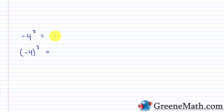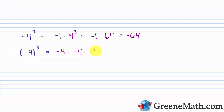Without parentheses, this is negative 1 times 4 cubed: 4 cubed is 4 times 4 which is 16 times 4 which is 64, so negative 1 times 64 is negative 64. With parentheses, this is negative 4 times negative 4 times negative 4: negative 4 times negative 4 is positive 16, and positive 16 times negative 4 is negative 64. We get the same result because we have an odd exponent. An odd number of negative factors will always give you a negative result. With an even exponent, an even number of negative factors gives a positive result — so whether you have parentheses around the base definitely changes the answer when you have an even exponent.